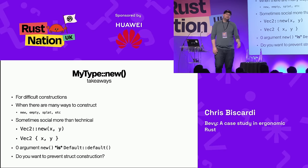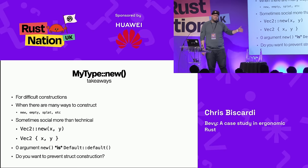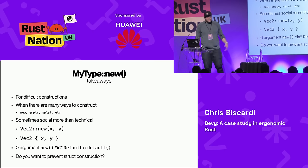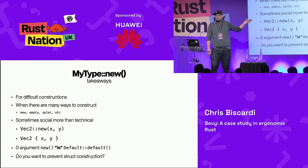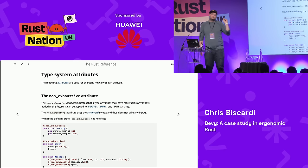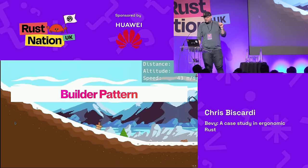Takeaways: new functions are for difficult constructions — private fields, things you can't or don't want to construct manually. There are many ways to construct: new, empty, splat, whatever you need. Sometimes providing a new function is more social than technical — yes, default exists, but everybody writing their first Bevy app uses new because people from other languages are used to it. Zero-argument new is basically default. And you can prevent struct construction with non-exhaustive or private fields if you want to.